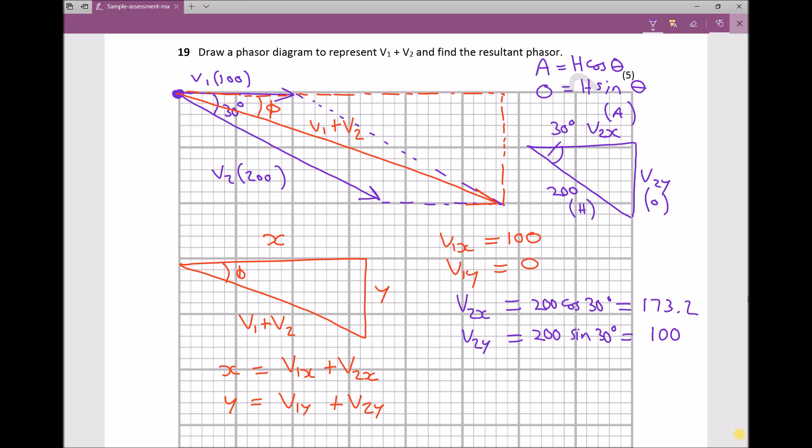The x component of our resultant is V1x plus V2x, which is 100 plus 173.2, or 273.2. And y is V1y plus V2y. V1y is 0 and V2y is 100, so 0 plus 100 equals 100.